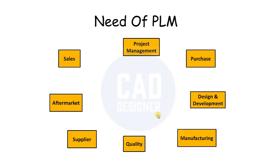When miscommunication happens, there will be rejection and rework on the product. All departments have dependencies on each other — the quality department depends on design and development, and the manufacturing department depends on design and development because they need the latest level CAD data. If miscommunication happens and they are using different CAD data or wrong drawings, it will create big issues and lead to product rejection.